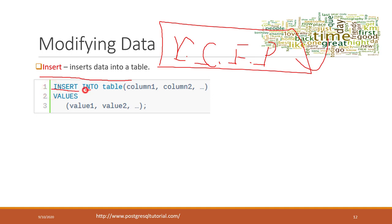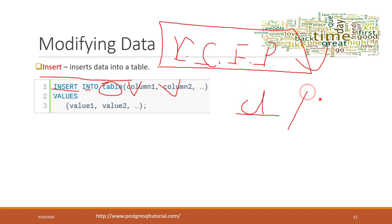You write INSERT INTO, then specify the table you want to insert data into, and list all the columns with values to insert — column 1, column 2, column 3. You can omit a column if it has a default value or if it has a value that can be automatically updated.